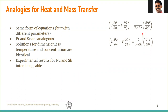Recognize that Pr and Sc are just constants in the equation. So if you have a generic dimensionless differential equation with one constant versus another constant, when you have the same form of differential equation but just different parameters, then the equations are said to be analogous. And these parameters, Pr and Sc, are analogous to each other.